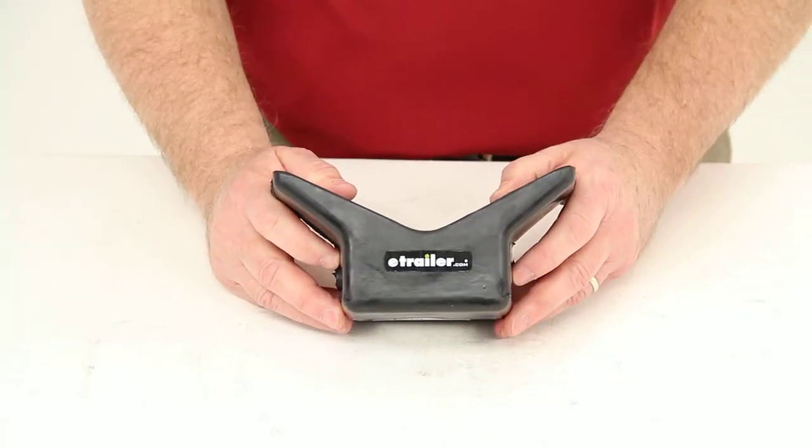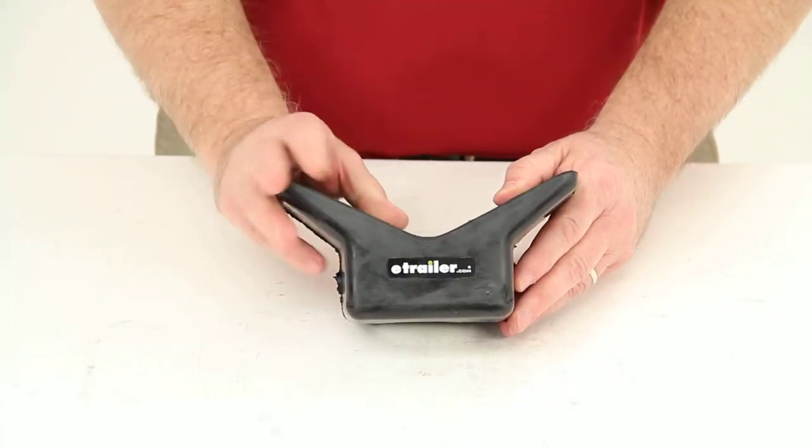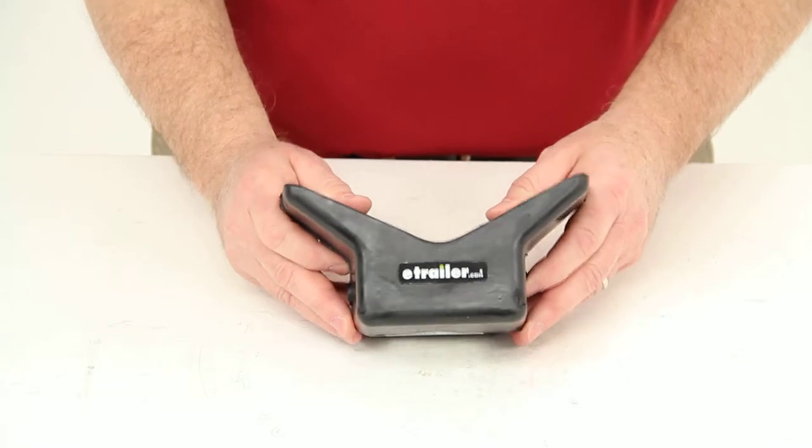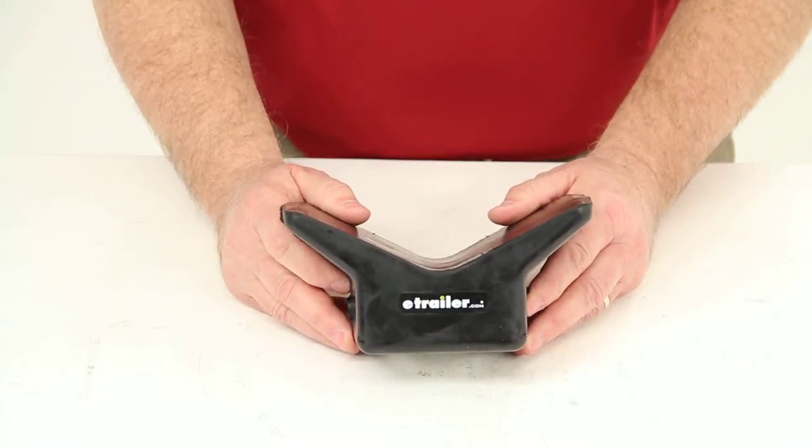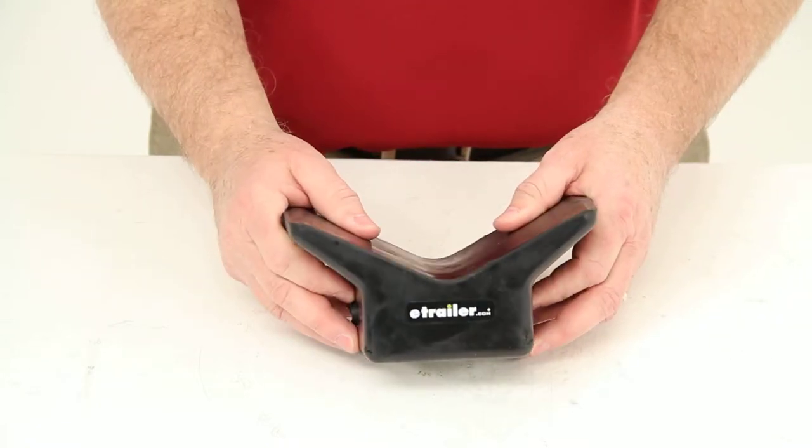This bow stop will replace the worn out stop on your boat trailer. The stop is constructed of heavy duty rubber and it is made in the USA.